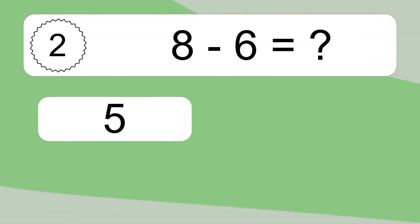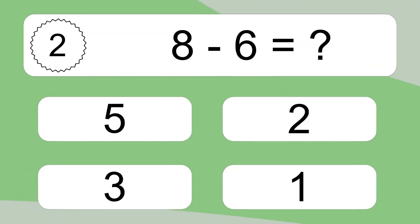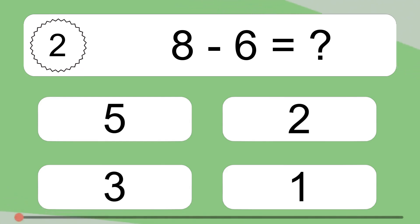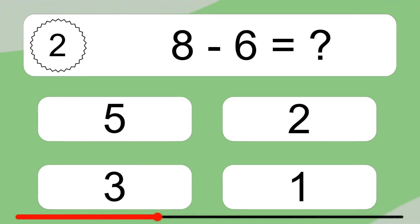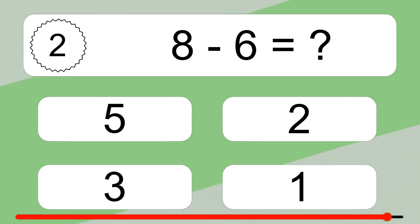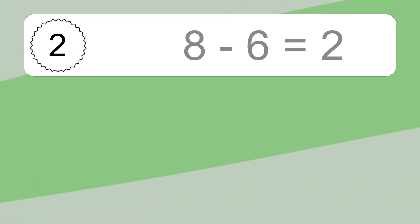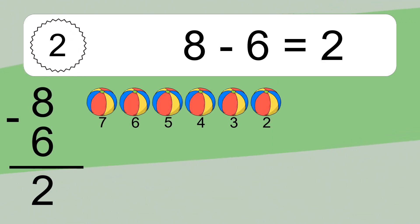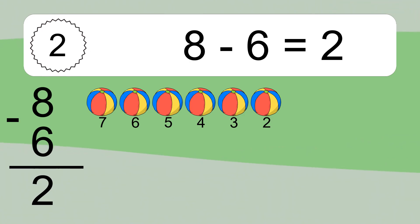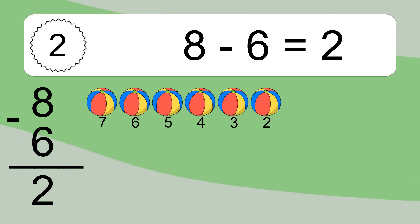8 minus 6 equals what? 8 minus 6 equals 2. Let's count it: 7, 6, 5, 4, 3, 2.